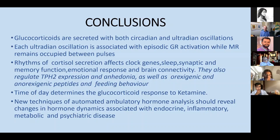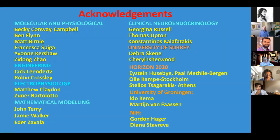In summary: glucocorticoids are secreted with both circadian and ultradian oscillations; each ultradian oscillation is associated with episodic GR activation while MR remains bound between pulses; these rhythms of secretion affect clock genes, memory, emotional response, brain connectivity, TPH2 expression (the main regulator of serotonin), anhedonia, and orexigenic and anorexigenic peptides — making them important in feeding behavior and mood. Time of day determines the glucocorticoid response to challenges like ketamine. Finally, new ambulatory hormone analysis techniques should reveal changes in hormone dynamics associated with endocrine, inflammatory, metabolic, and psychiatric disease.